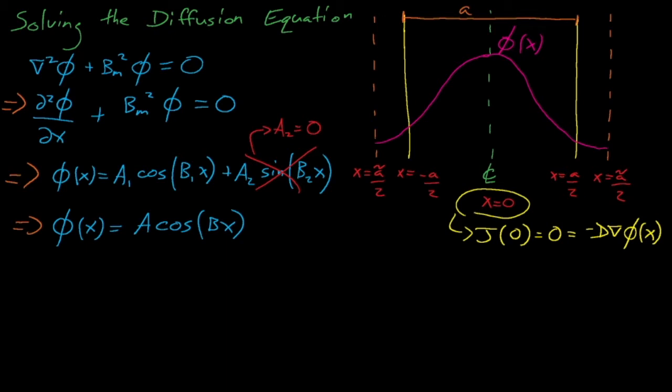Now what else do we know about the system, and what other boundary conditions can we introduce? Well, we also know that our system cannot produce an infinite number of neutrons, and so if we were to extrapolate the flux in our slab, the flux must approach zero at some arbitrary point, which is plus or minus a tilde divided by 2. The flux is not zero at the boundaries of the slab, since fuel at the edge can still fission and must still see some neutron flux, but we can assume that the flux will decrease to zero at some point beyond the fuel.